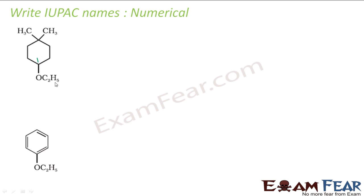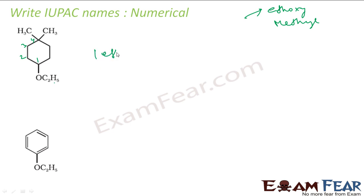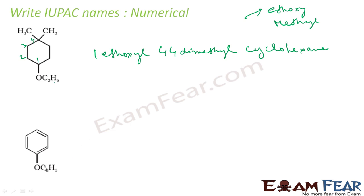This will be my first position because it is ethoxy group, at positions 2, 3, 4. So I have ethoxy group and methyl group, ethoxy and methyl group attached to cyclohexane. So it will be 1-ethoxy, 4-dimethyl cyclohexane. This is pretty easy — I have an ethoxy group attached to a benzene, so it will be ethoxybenzene.